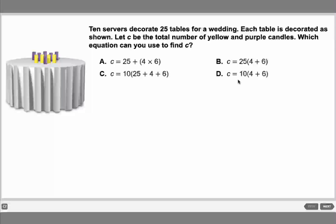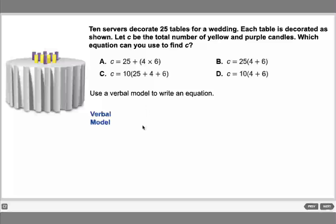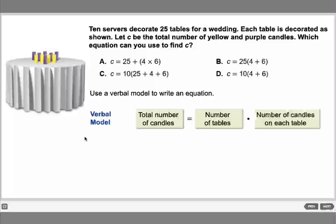We should first use a verbal model to write an equation. I'll write it in English first, then convert it to math. The total number of candles equals the number of tables times the number of candles on each table.